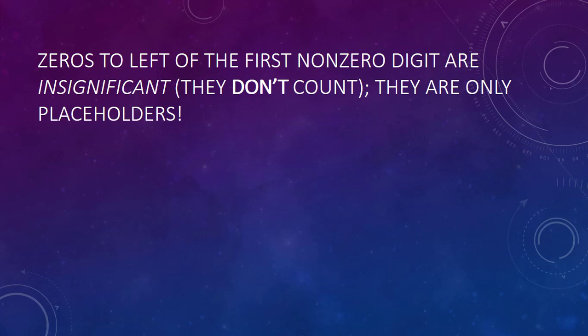The last rule has to do with zeros in a number smaller than one. The zeros to the left of the first non-zero number are not significant. These are similar to trailing zeros with no decimal in that they are only there to hold the place. Any zero to the right of the non-zero numbers are significant. So the zero in 0.123 is not significant because all it's doing is holding a place — the only things that are significant are the three non-zero numbers, so we have three significant figures.